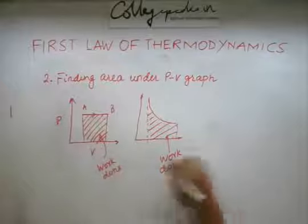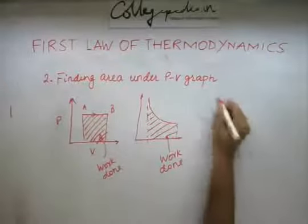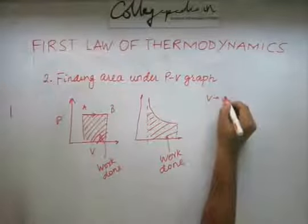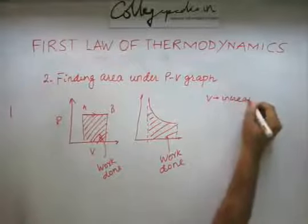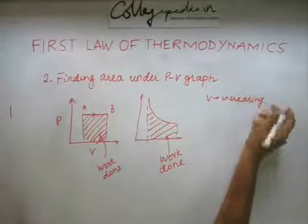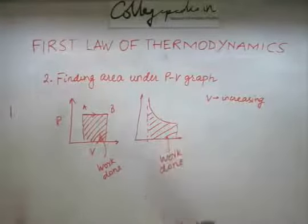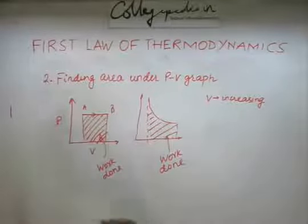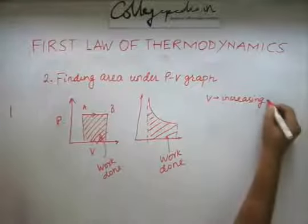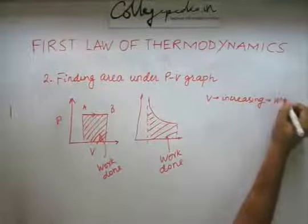Now, this has a sign convention again. So if the volume is increasing, you know from PV work, if volume is increasing, that means the piston is getting pushed by the gas. So if the gas is pushing the piston, the volume is increasing and thus work done is positive.